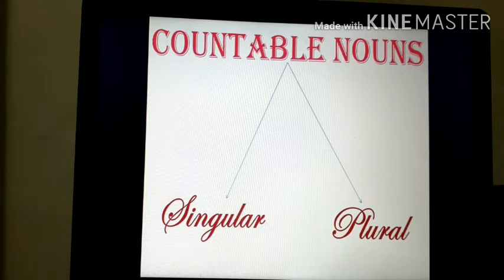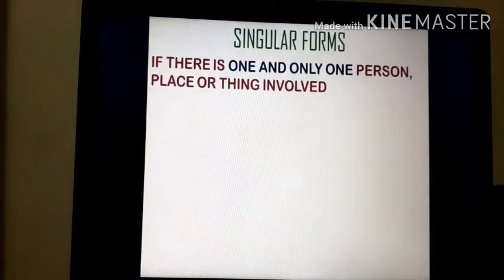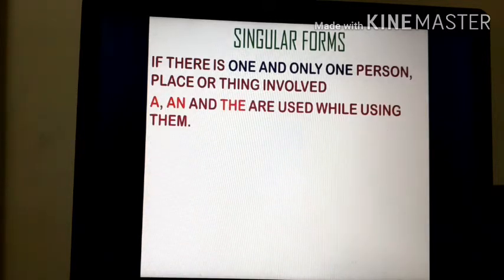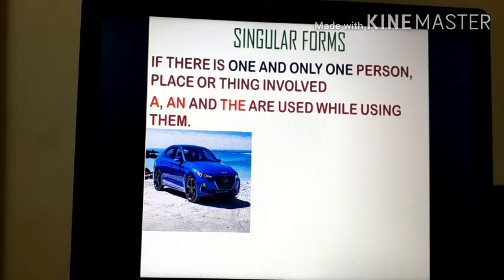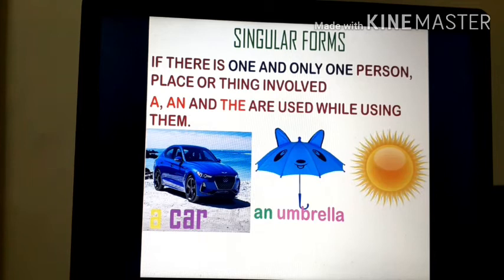Countable nouns can be categorized in two forms: singular form and plural form. If there is one and only one person, place or thing involved, then we call them singular form. A, an and the are used with them. For example: a car, an umbrella, the sun.